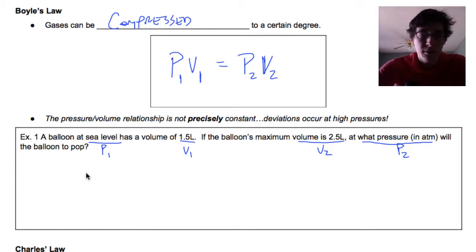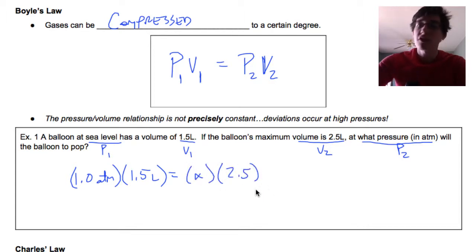So let's start with P1V1. Pressure one at sea level, remember from the last section, this is one atmosphere. So 1.0 atm times the volume, 1.5 liters, is going to be equal to its second volume and second pressure. So pressure two is our unknown, so this is going to be x times 2.5.